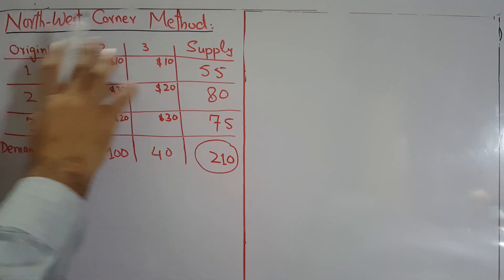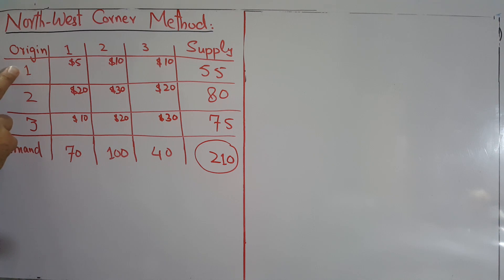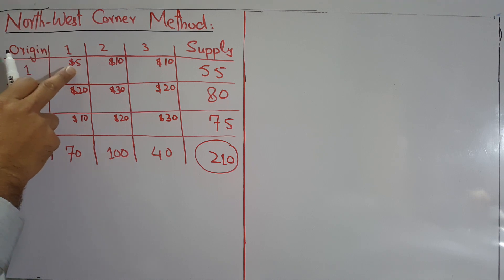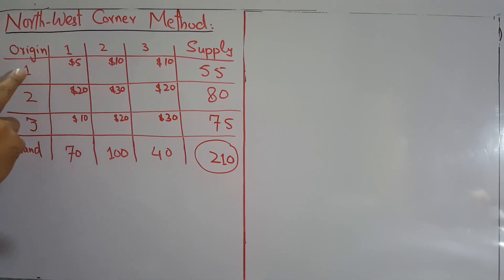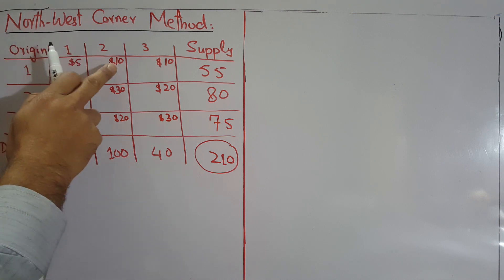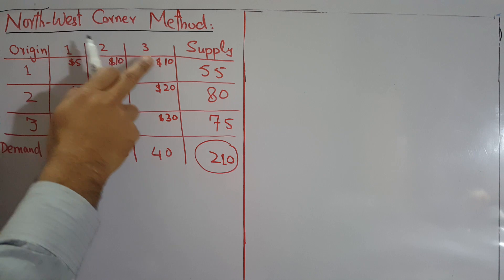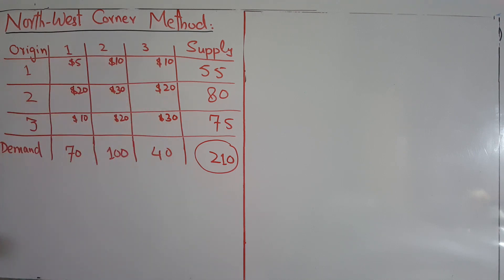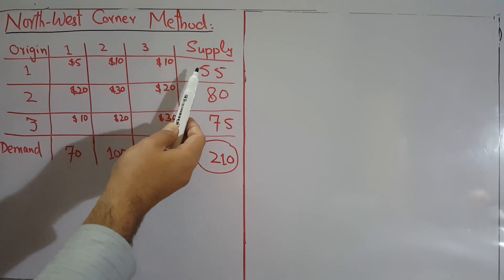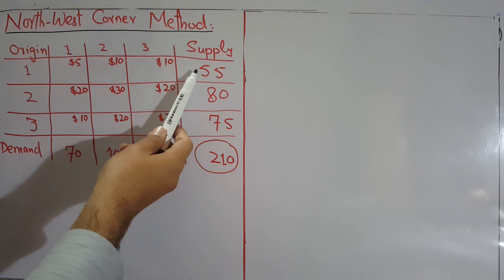According to this method, if you are given a transportation problem, what you can see here is the cost of shipping from origin to destination 1 — the cost per unit is $5. Similarly, from origin 1 to destination 2 is $10, and from origin 1 to destination 3 is $10. These are all the costs given from different origins to different destinations. And then you are given the supply.